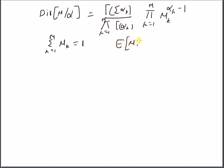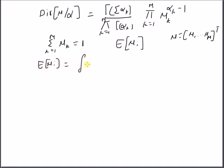Our goal is to find the mean of a random variable mu_i, which is part of the random vector mu. Mu basically consists of mu_1 up to mu_m. The mean is defined as the integral of mu_i times the marginal probability of mu_i d mu_i, where this marginal probability is actually an integration over the entire joint probability given by this distribution.